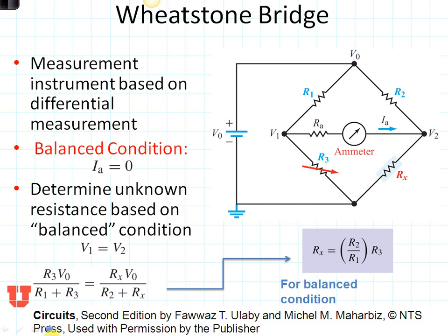Basically, once we have the balanced condition, we can just tweak R3 until Ia is equal to zero. And then we know what Rx is equal to. Rx right here is equal to R2 divided by R1 times R3, which we can also measure.